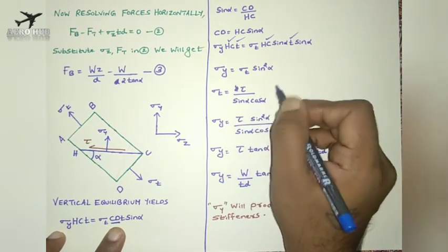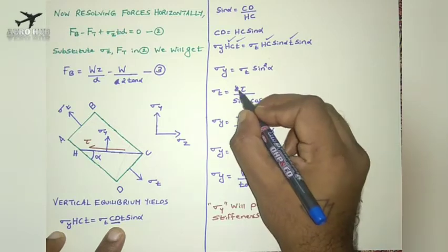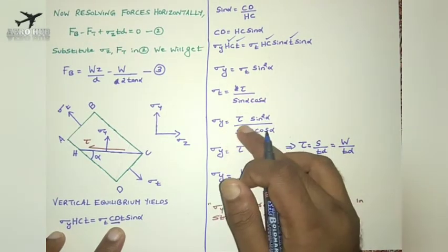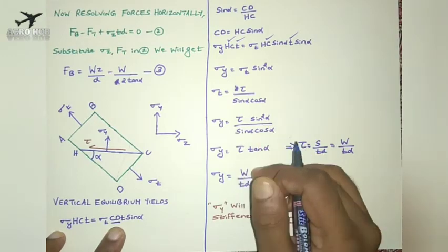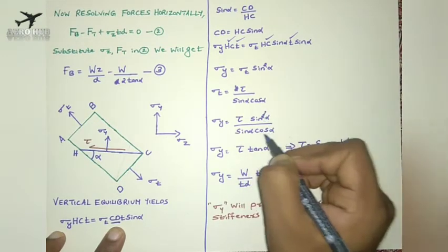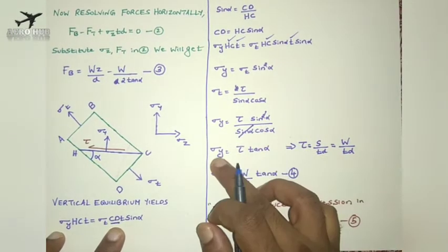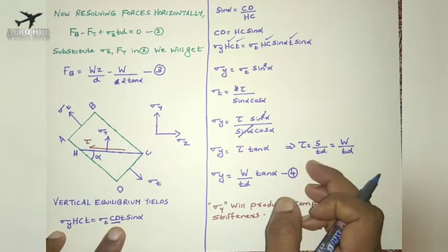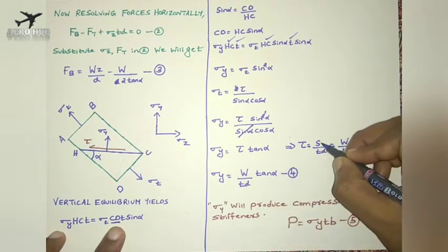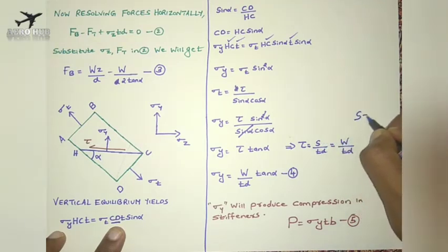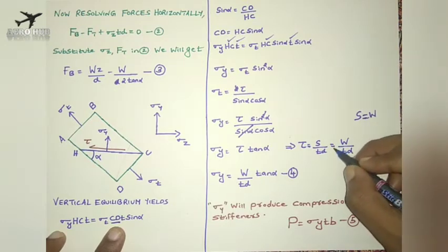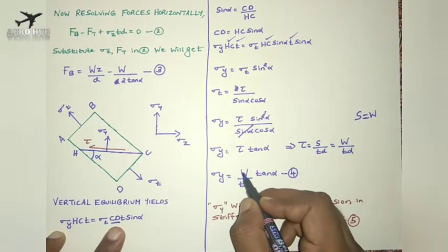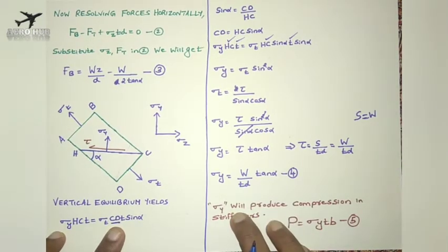From the previous lecture, sigma_t = τ / (sin(α) * cos(α)). Substituting into sigma_y = sigma_t * sin²(α): sigma_y = [τ / (sin(α)*cos(α))] * sin²(α). Cancelling one sin(α), we get sigma_y = τ * tan(α), since sin(α)/cos(α) = tan(α). And since tau = w/(td), substituting gives sigma_y = w/(td) * tan(α). This is the equation for stress acting on the vertical plane.